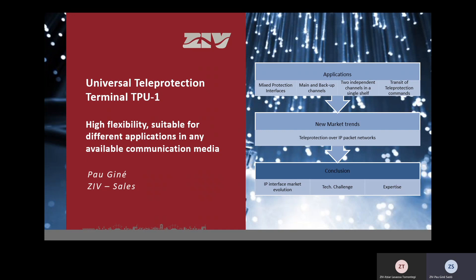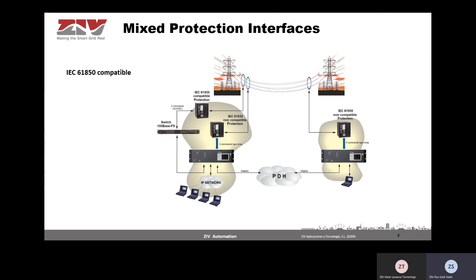ZAV's teleprotection, called TPU, is a universal teleprotection unit with a modular design that makes it possible to be used in different applications in any available communications media. Looking at the first application — mixed protection interfaces — in this example we can see a teleprotection unit that has an IEC 61850 protection interface and, simultaneously, an analog protection interface.